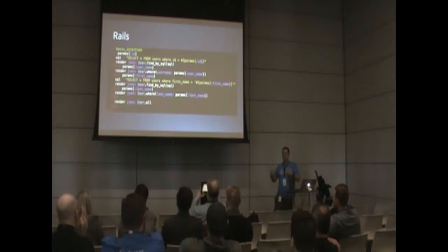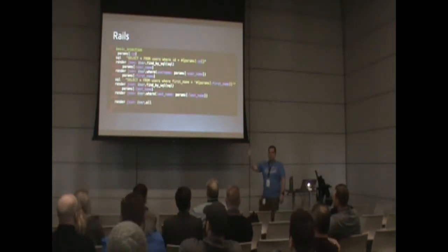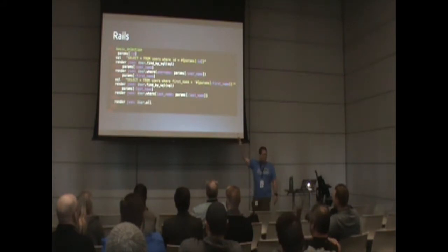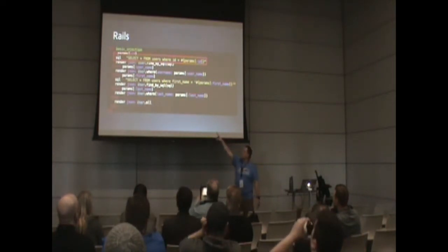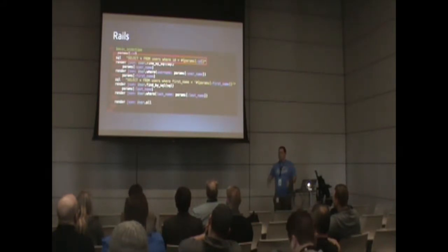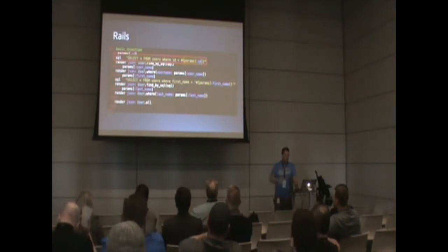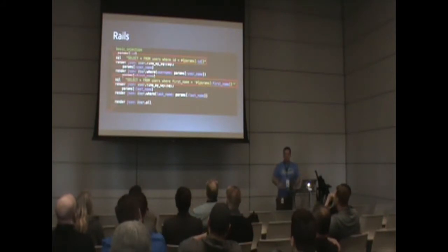Let's quickly look at what vulnerable code looks like. In Ruby on Rails, here's a very basic vulnerability. I'm writing a SQL statement — it's a SELECT star FROM users WHERE ID equals the query parameter called ID. We're just taking the direct user input and putting it right in the SQL statement. This is a very exploitable query parameter. I've created a small database with just a users table for this example.